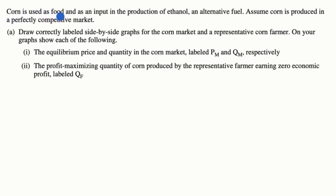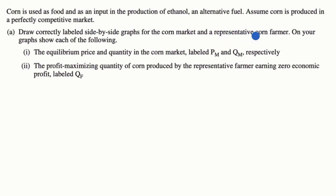We're told corn is used as food and as an input in the production of ethanol, an alternative fuel. Assume corn is produced in a perfectly competitive market. Draw correctly labeled side-by-side graphs for the corn market and a representative corn farmer. Show each of the following: the equilibrium price and quantity in the corn market, labeled P sub M and Q sub M respectively.